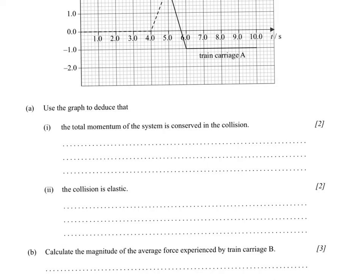Use the graph to deduce that the total momentum of the system is conserved in the collision. So, if momentum is conserved, that means that the momentum before is equal to the momentum afterwards. With the equation P, which is momentum, equals MV.